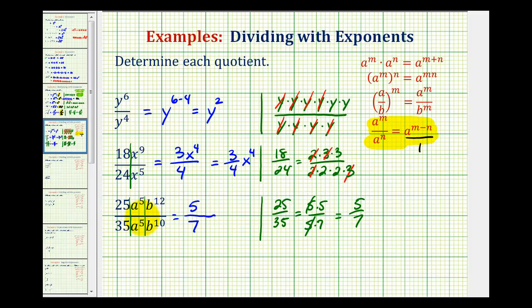And now we have a to the fifth divided by a to the fifth. But we should recognize that anything divided by itself is going to equal one. Notice if we didn't recognize that and we tried to apply the quotient property, we would have a to the five minus five, which would be a to the zero, which by definition is equal to one.